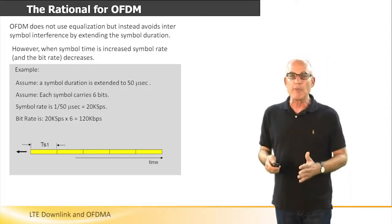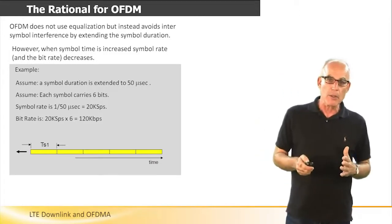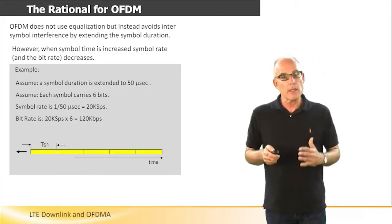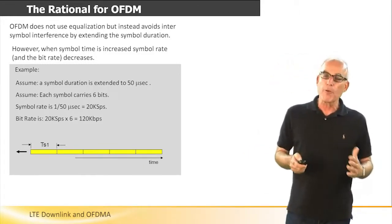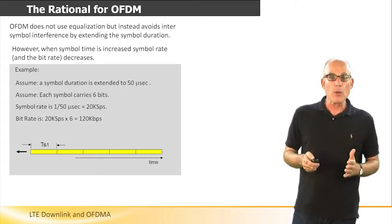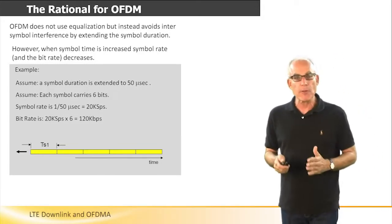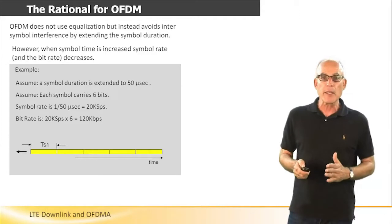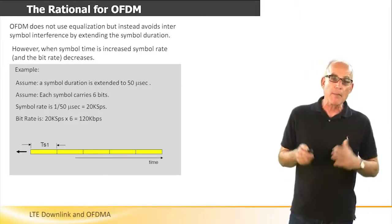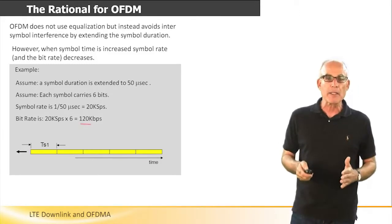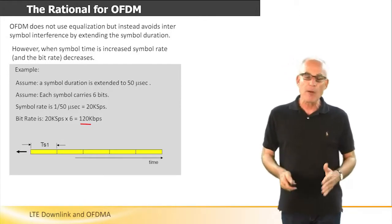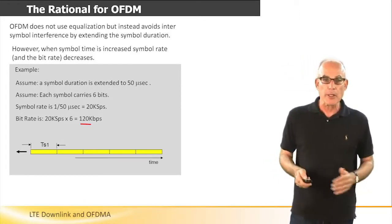So we'll extend the symbol duration to 50 microseconds. Let's check what may be the maximum data rate achievable with a 50 microsecond symbol duration. Assuming we can work with 64 QAM, which means 6 bits per symbol, and since the symbol duration is 50 microseconds, the symbol rate will be 20 kilo symbols per second. Multiplying by 6 bits gives a maximum data rate of 120 kilobits per second. This is definitely not enough for a modern communication system.